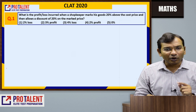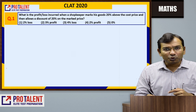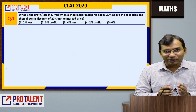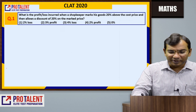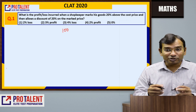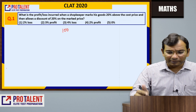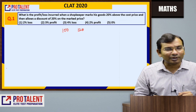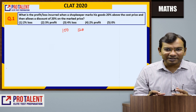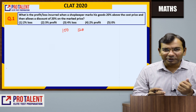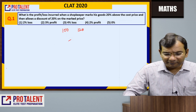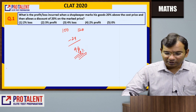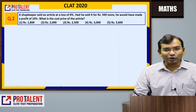Question 1: What is the profit or loss when a shopkeeper marks his goods 20% above the cost price and allows a discount of 20% on the mark price? We assume cost price is 100, so mark price becomes 120. A 20% discount on 120 is 24, so 120 minus 24 equals 96. That means there is a 4% loss. So 4% loss is the answer.